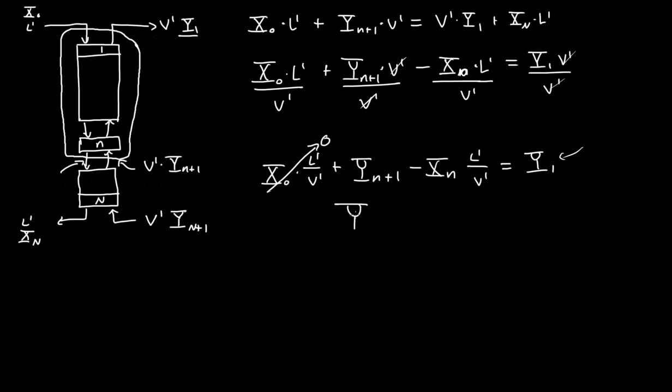So then we get yn plus 1 is equal to y1 plus xn l prime over v prime. Why did I write that? That's actually so we can graph it and we'll actually get some useful information out of it when we start graphing them. I mean, this seems like what you would want, but it's actually much more useful to write it this way and use it in a graph. So in the next video, I will start graphing and we'll see where we get.